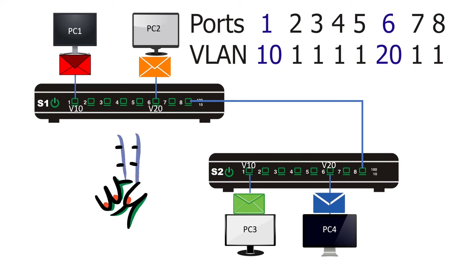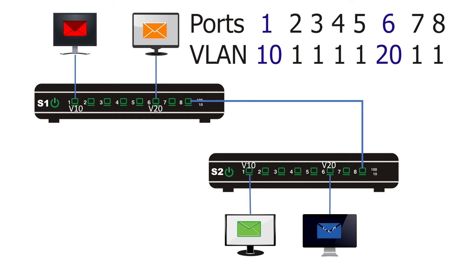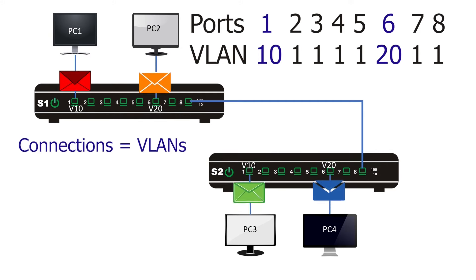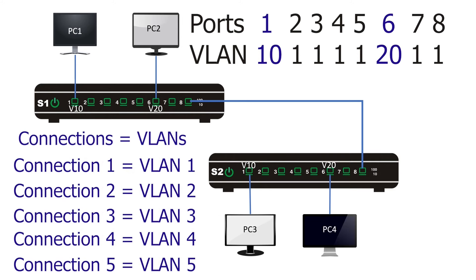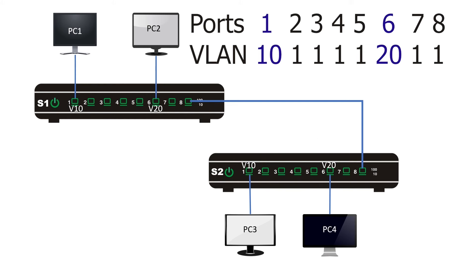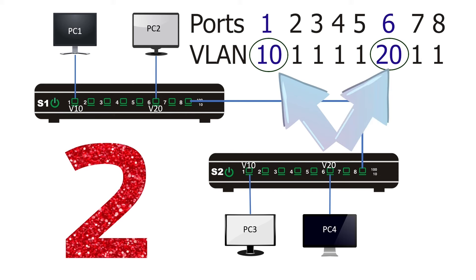We have two options to solve this problem. The first option creates as many connections between switches as there are VLANs, and configures each connection in the corresponding VLAN. For example, if we have five VLANs, we need five connections. Here, we have two VLANs, so we need two connections — one for each VLAN.